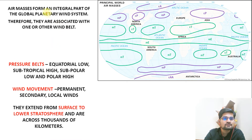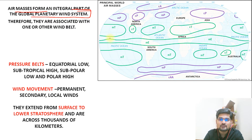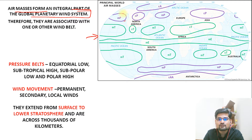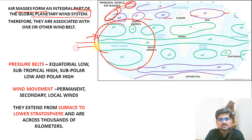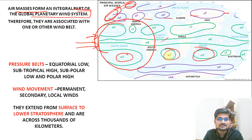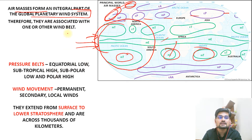Air mass formation is an integral part of the global planetary wind system. Different places have different air masses. If you look into this global image, you can see all these air masses. Looking at the Ferrel cell and the polar cell, these have air masses of peculiar nature. When you are in the tropics, different places have different kinds of air masses. There is a change in characteristic across these belts.